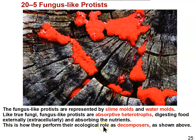They are absorptive heterotrophs, as opposed to ingestive heterotrophs like animals. This is how they perform their ecological role as decomposers, just like true fungi. Both true fungi and these fungus-like protists — the slime molds and water molds — are decomposers. They help to break down organic material and make nutrients available to their ecosystems. That's what makes them similar to true fungi, but what makes them different?